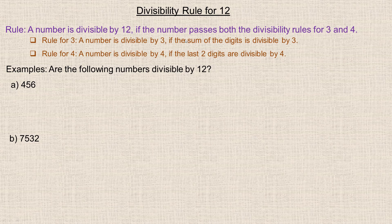I've duplicated the two rules for 3 and 4 here. A number is divisible by 3 if the sum of the digits is divisible by 3. And a number is divisible by 4 if the last two digits are divisible by 4.